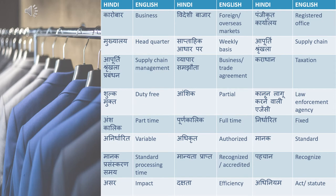Aanshik means partial. Kanun lagu karne wali agency means law enforcement agency. Anshkalik means part time. Purnakalik means full time. Nirdharit means fixed. Anirdharit means variable — it can also be said parivartaniya. Parivartan means change, parivartaniya means variable, and anirdharit means fixed. I am just giving you different synonyms for these words.